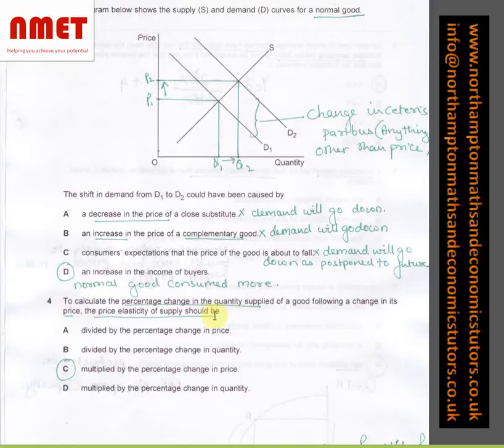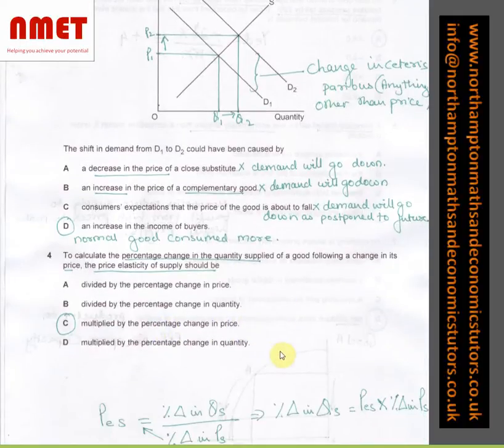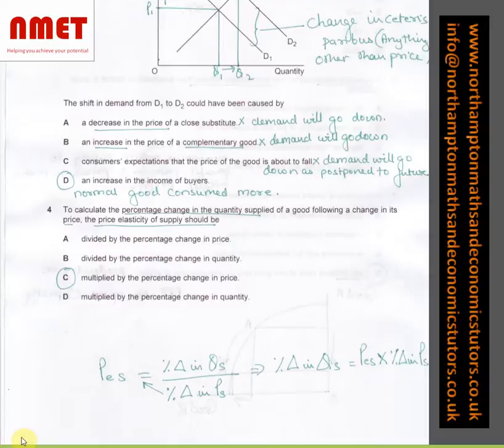In question number 4, to calculate the percentage change in the quantity supplied of a good following a change in its price, the price elasticity of supply should be C multiplied by the percentage change in price. The best way to work this out should be using the formula as I have shown over here.